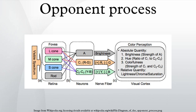Rather than each type of cone's individual response, the opponent color theory suggests that there are three opponent channels: red versus green, blue versus yellow, and black versus white.